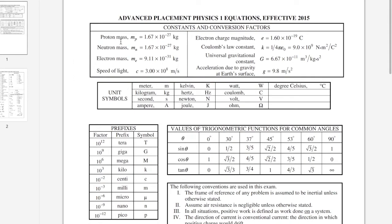Now, on the first page, we have a few constants. Proton, neutron, electron mass. The speed of light, which is 300 million meters per second. We have things like the Coulomb's law constant, which you don't know anything about yet. The universal gravitational constant, which you don't know anything about yet. We'll also discuss acceleration due to gravity at Earth's surface. This will be a gravitational field.